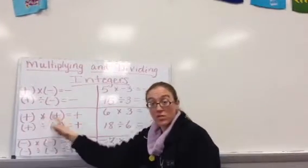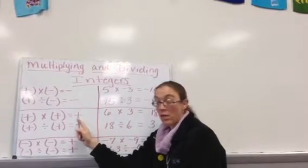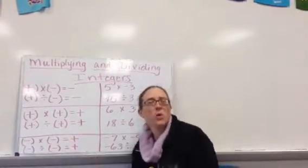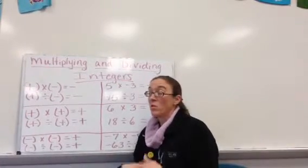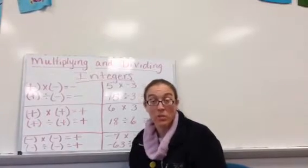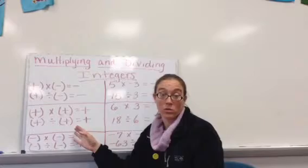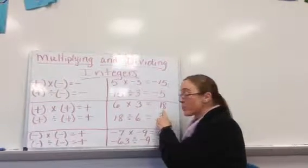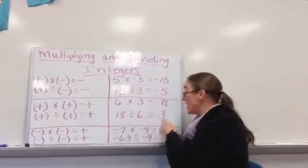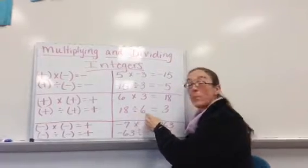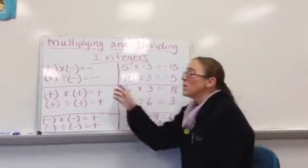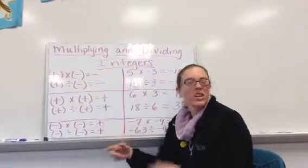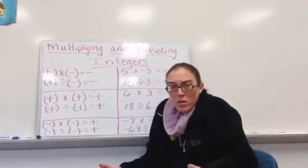If you have two positives, it's going to give you a positive answer. Dividing and multiplying by two positives is what we're already used to. When we were in elementary school, we would always divide and multiply positive numbers. So positive 6 times positive 3 is positive 18, and positive 18 divided by positive 6 is positive 3. Two numbers that are positive multiplied or divided will always give you a positive number.